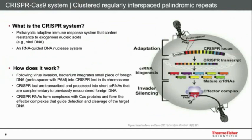CRISPR-Cas9 stands for Clustered Regularly Interspaced Palindromic Repeats. This is a prokaryotic adaptive immune response system that confers resistance to exogenous nucleic acids — it's an RNA-guided DNA endonuclease system. Following a viral invasion, bacteria integrate a small piece of foreign DNA into the CRISPR loci in their chromosome. These loci are transcribed into short CRISPR RNAs complementary to the previously encountered foreign DNA, preparing the bacterium for subsequent viral attack by forming effector complexes with Cas proteins that guide detection and cleavage of target DNA.